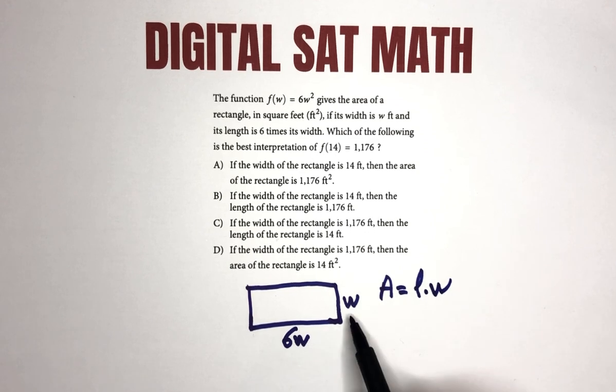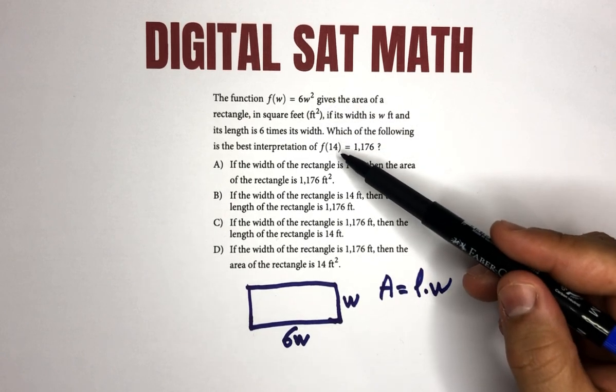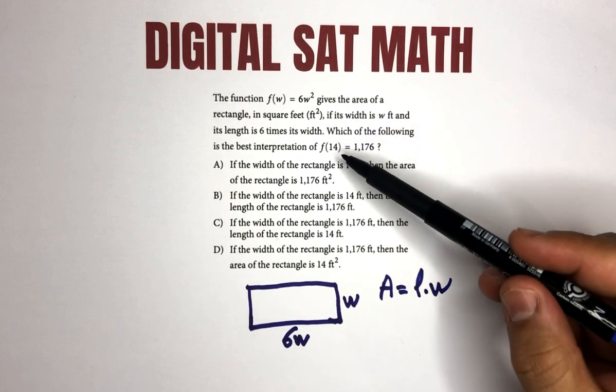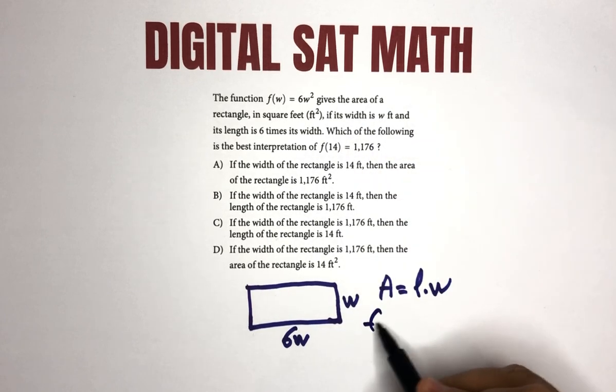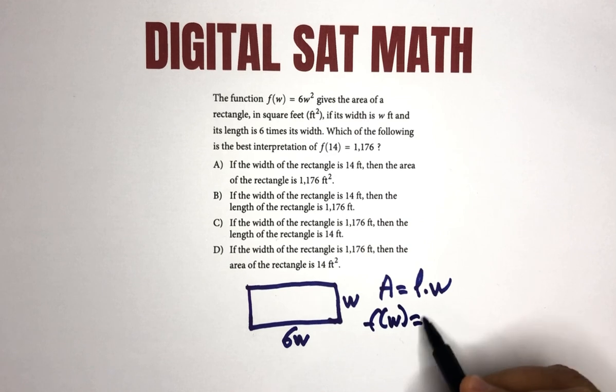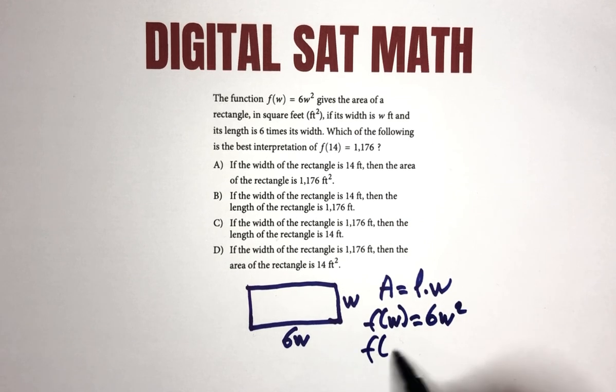So 6w times w will give you 6w². So in this function they give you f(14), so technically in this function f(w) = 6w², instead of w, they put 14.